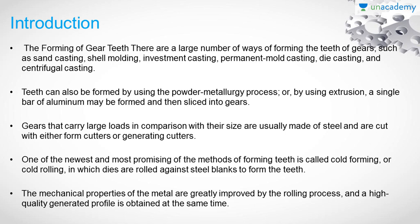There are several types of formation of gear teeth such as sand casting, shell molding or investment casting, permanent mold casting, die casting, and centrifugal casting. These are the most commonly used forming processes for gear teeth. The gear teeth can also be formed by using the powder metallurgy process and by the extrusion process, where a single bar of aluminum is taken and from that we form the gear by slicing it into gears.